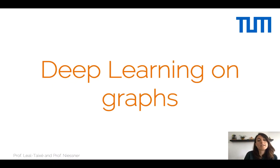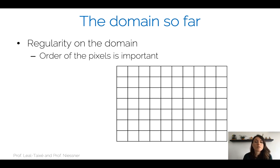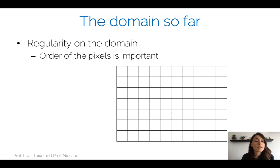Welcome to the lecture on deep learning on graphs. Today we're going to move a little bit away from the domain we have seen so far. So far we have worked a lot on images, which is a very regular domain. The order of the pixels is really important — whether you have the eye and the nose at a certain location matters. Neighbors are always placed on the same positions, and the order is also important.